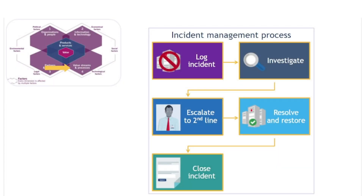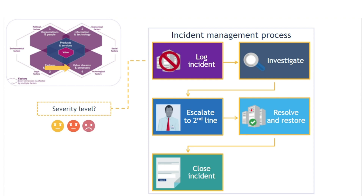Consider incident management. The primary process involved is restoring normal service following a service incident. This is too important a matter to be left to chance, so an organisation will want to implement a defined process for responding to incidents in order to ensure a methodical, consistent approach is adopted. This will involve, for example, mapping out a process model or models for the different types of incident, and documenting more detailed guidance in procedure-level documentation and work instructions.